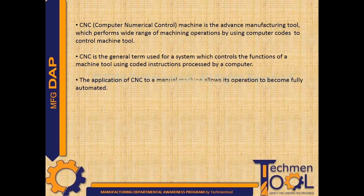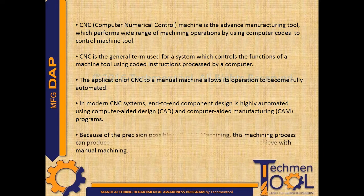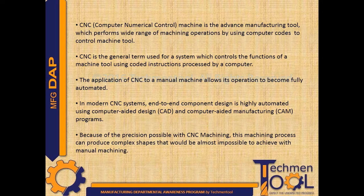The application of CNC to a manual machine allows its operation to become fully automated. In modern CNC systems, end-to-end component design is highly automated using computer-aided design and computer-aided manufacturing programs. Because of the precision possible with CNC machining, its machining process can produce complex shapes that would be almost impossible to achieve with manual machining.